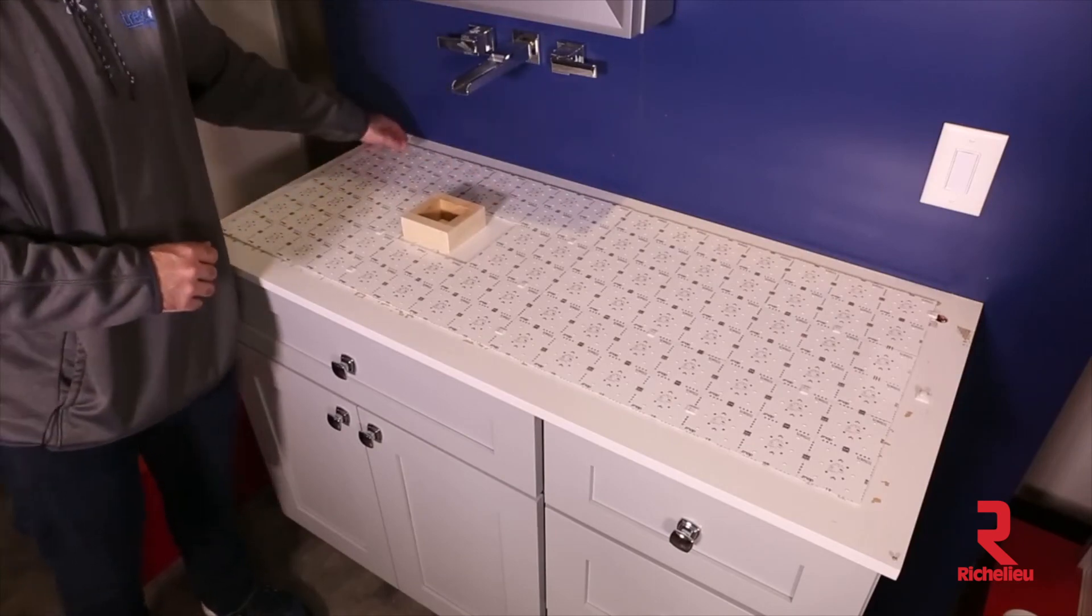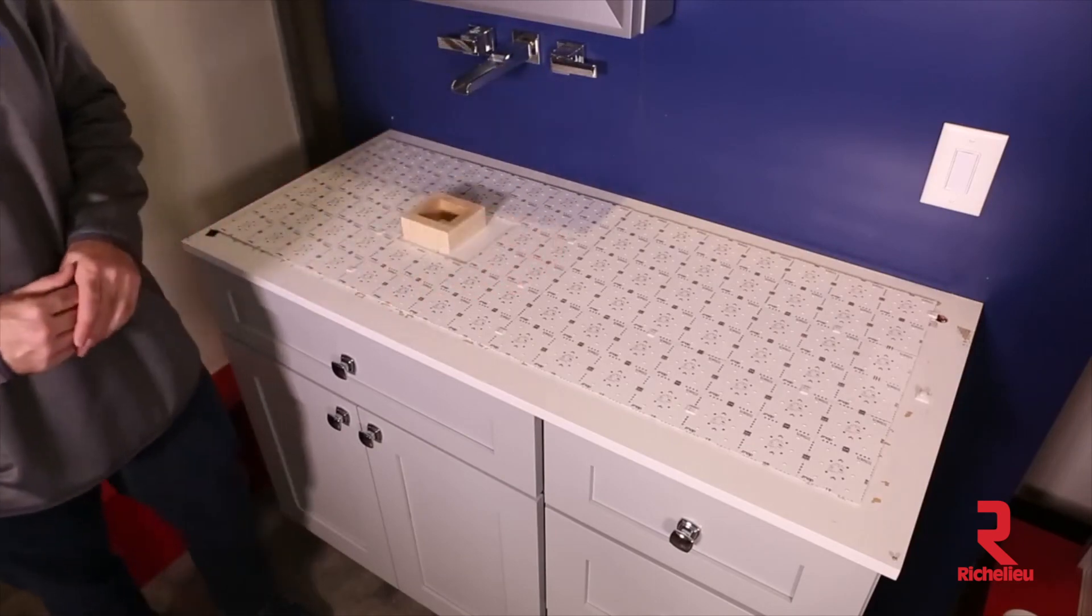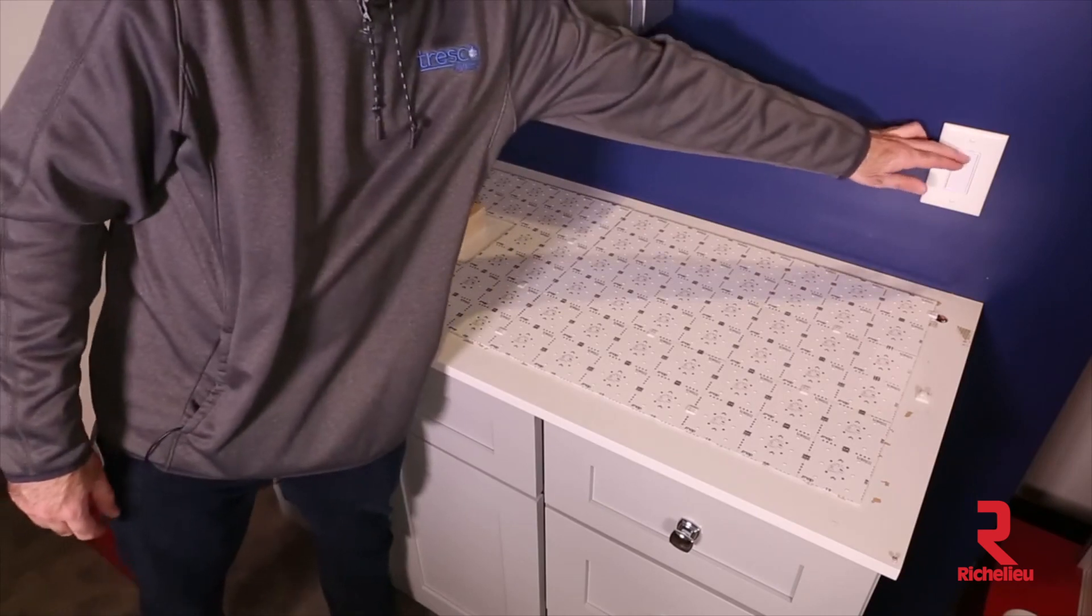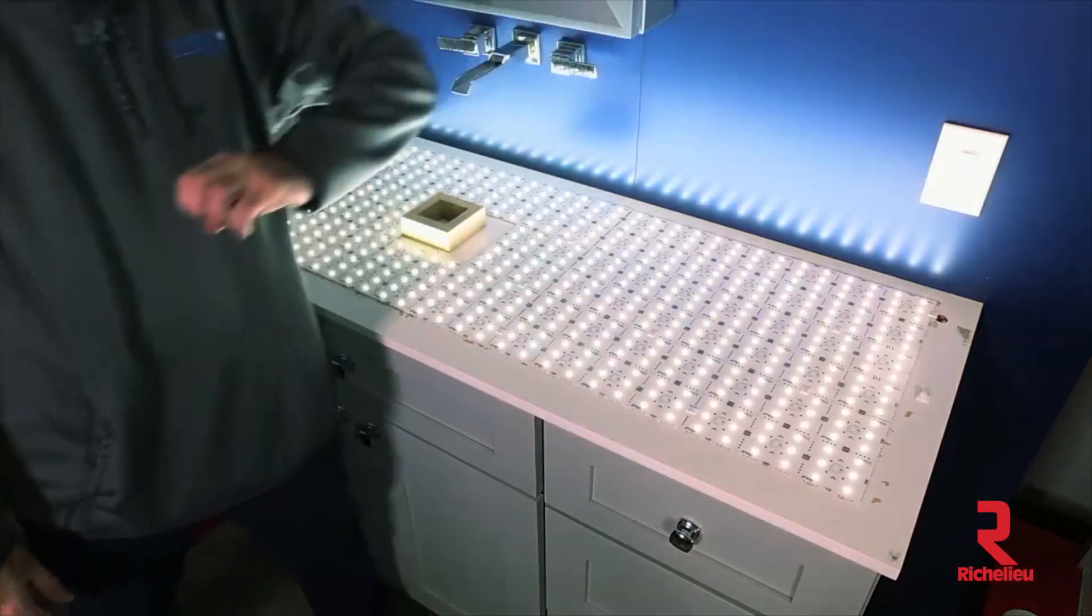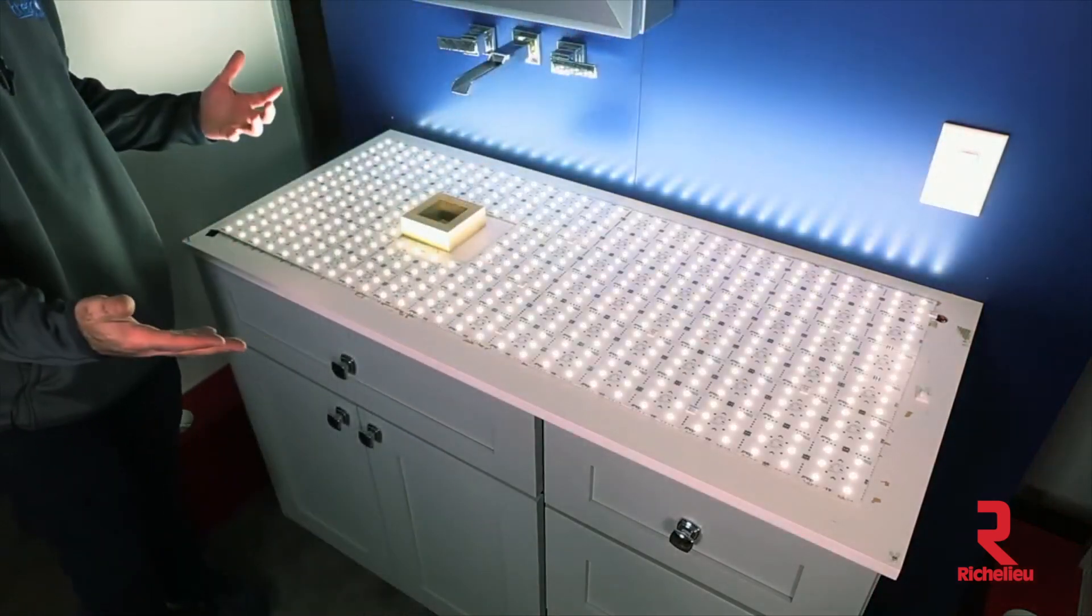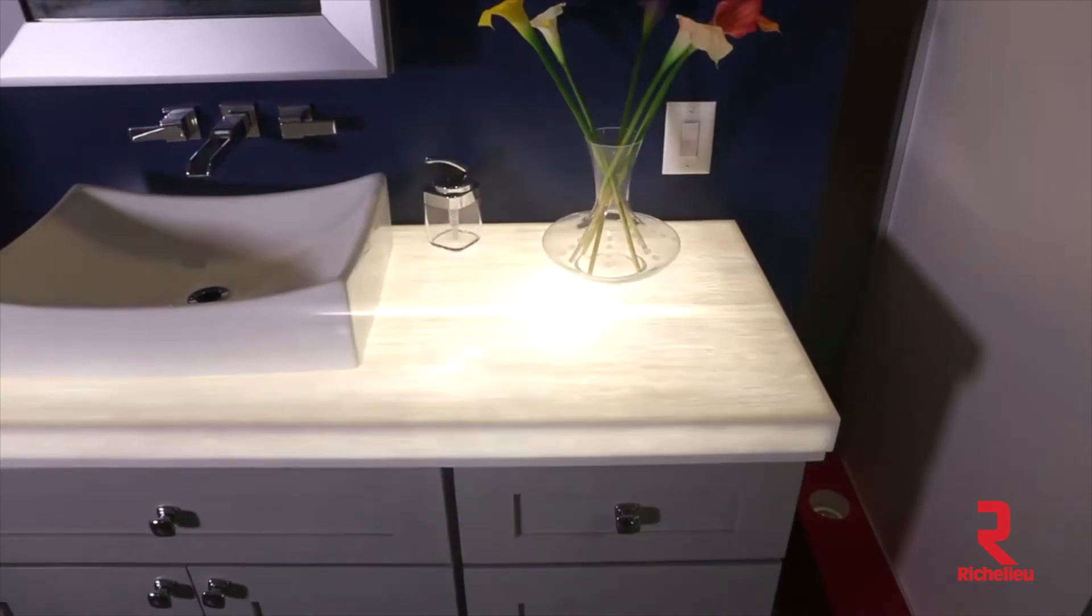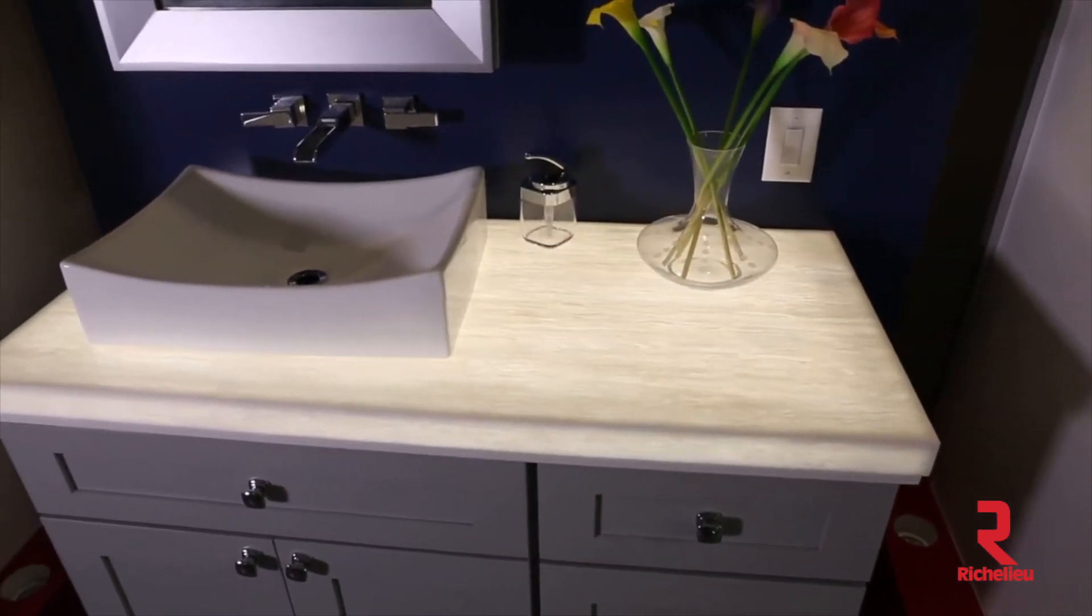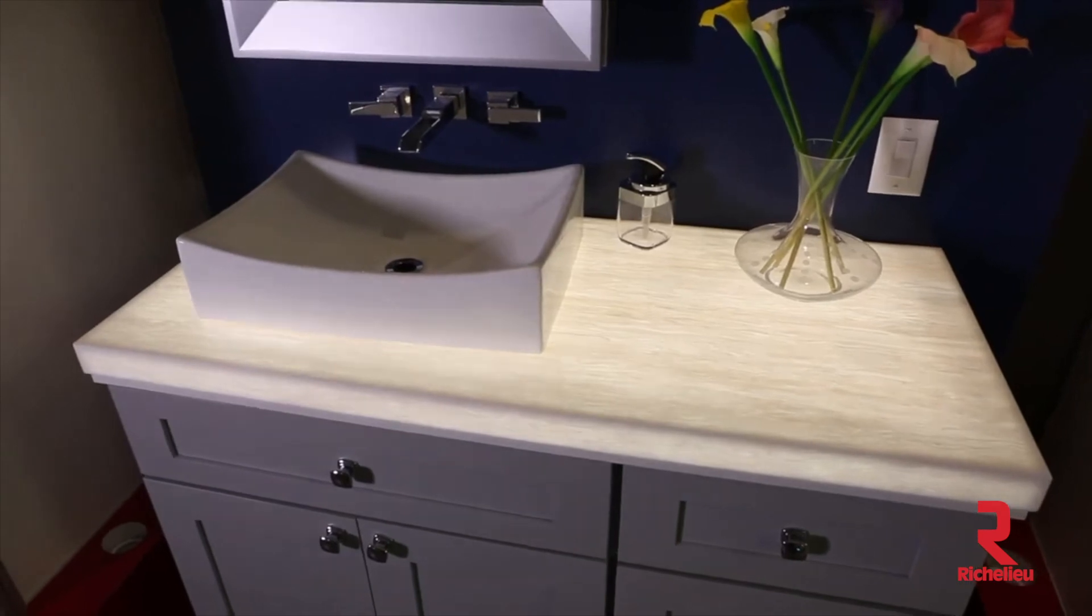So once you have it laid out and everything connected, you can hook it up to one of our dimmers, wireless dimmers, and you have your light fixture there. Reinstall your countertop and everything should look beautiful from that point on.